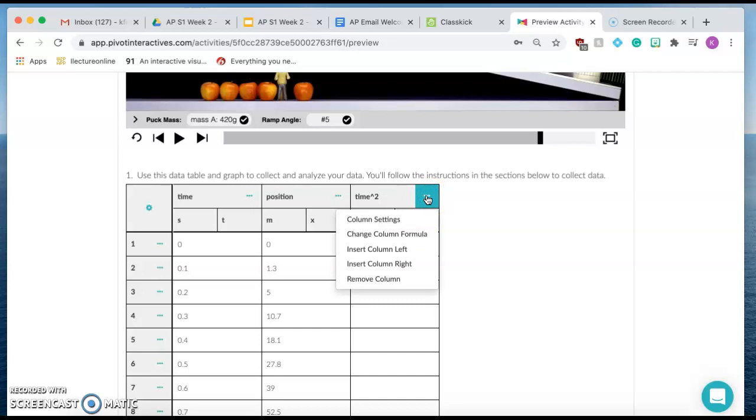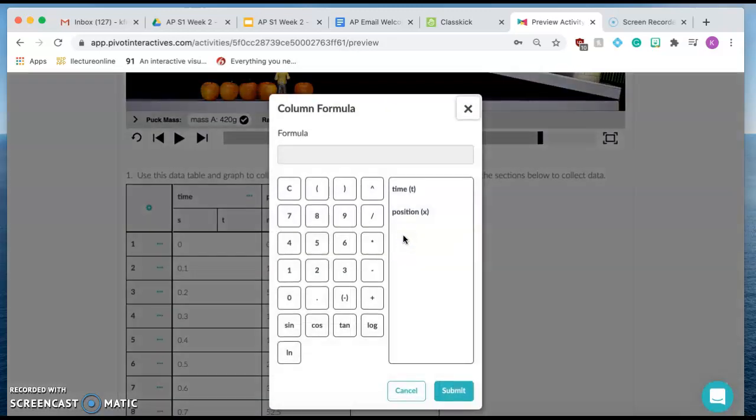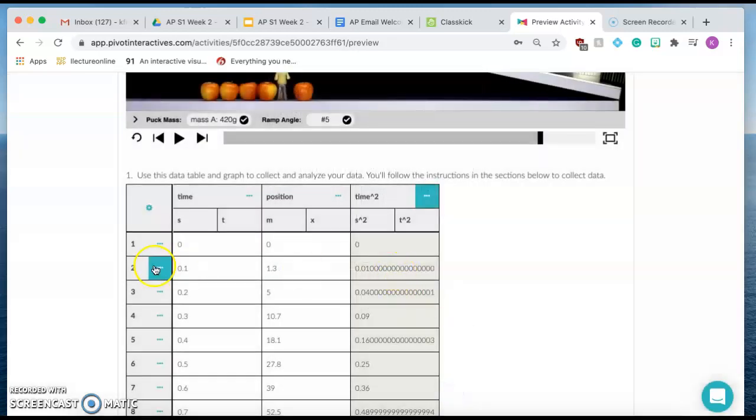And then if I click here again and I change the column formula, I can take the column time, okay? And then square it, submit, and then that's going to basically take, so 0 squared is 0, 0.1 squared is 0.01, 0.2 squared is 0.04. So if you see, it's just squaring the time, okay?